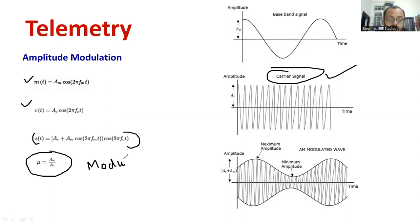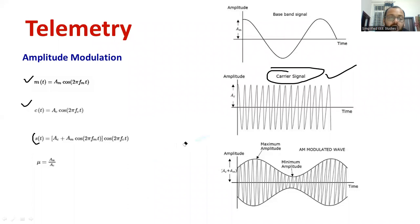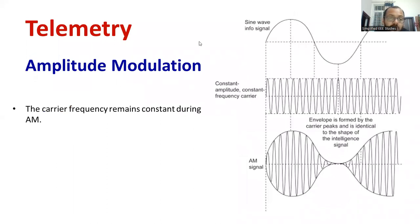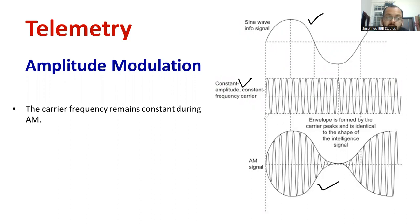Make a note of the modulation index. While designing the system, we require this ratio. These parameters are the fundamentals; I am not going in-depth because our main area is telemetry — how amplitude modulation helps in a telemetric system is the ultimate goal. We are superimposing the property of the message signal with respect to the carrier signal to get the modulated signal, which is capable of transmitting for a certain distance. Once it reaches the destination, we can separate the message signal and the carrier signal using any kind of demodulation technique.